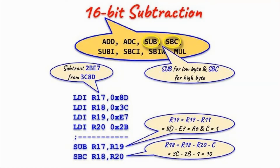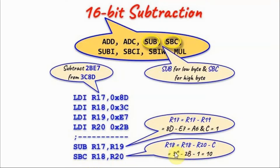The next operation is 16-bit subtraction, which can be achieved using the subtract and subtract with carry instructions. As an example, we want to subtract one 16-bit value from another. We store the first number's low byte in R17 and high byte in R18, and the second number's low byte in R19 and high byte in R20. We subtract the low bytes using the subtract instruction, giving a result of 0xA6 with the carry flag set. We then use subtract with carry to subtract the high bytes and the carry value, giving a result of 0x10. So the 16-bit result is 0x10A6.